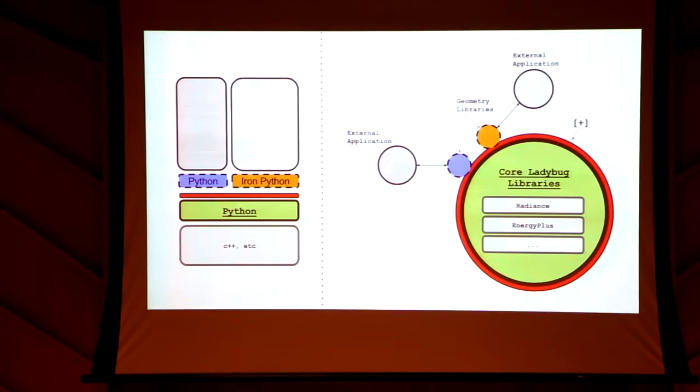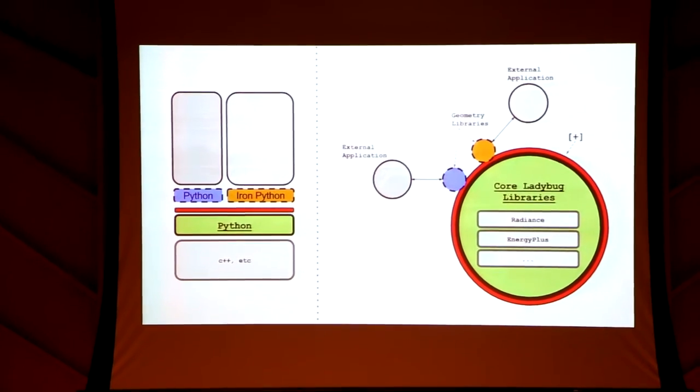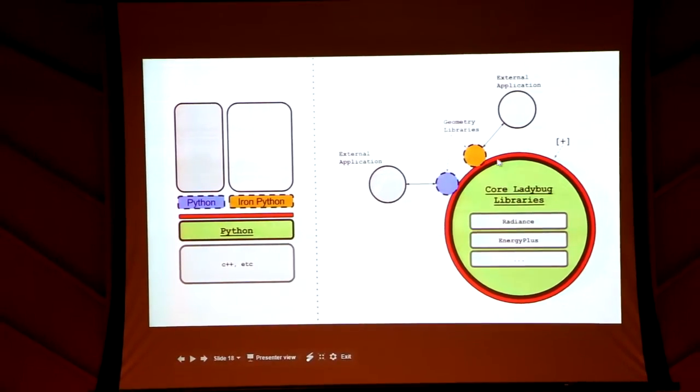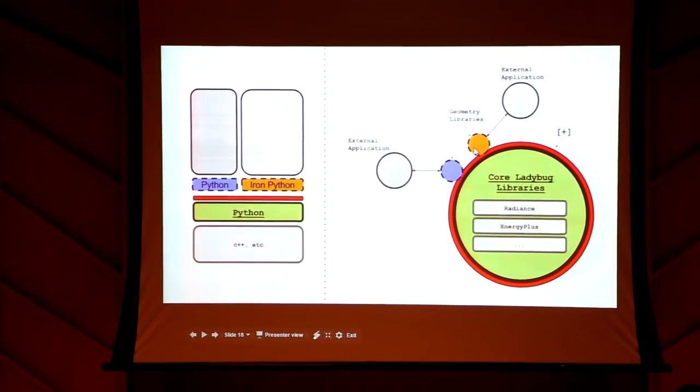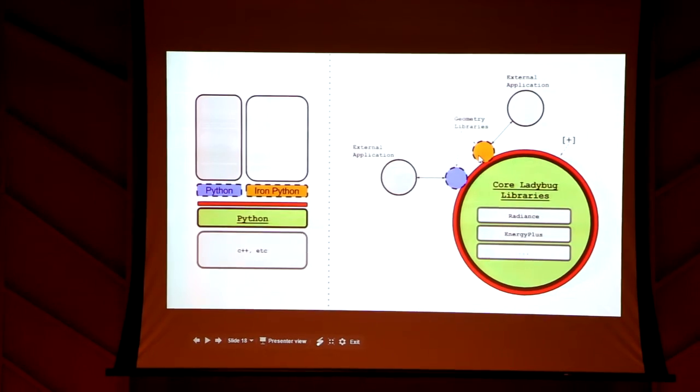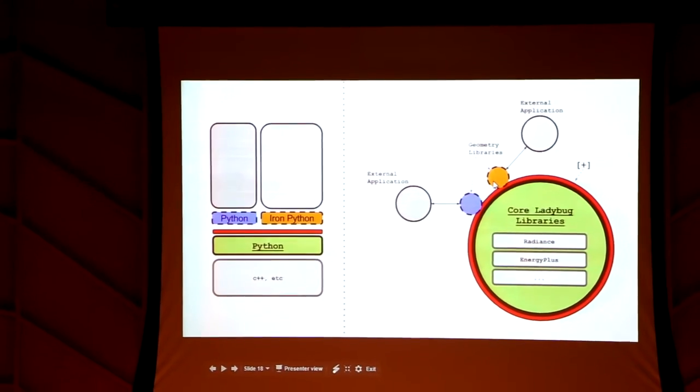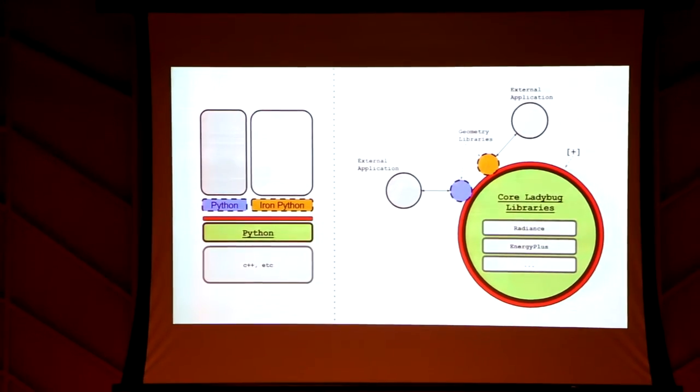There are a lot of good things about this structure, but the best part is if you rewrite this geometry library - which right now for Honeybee is around 100 lines of code - you'll have a full plugin for your application.